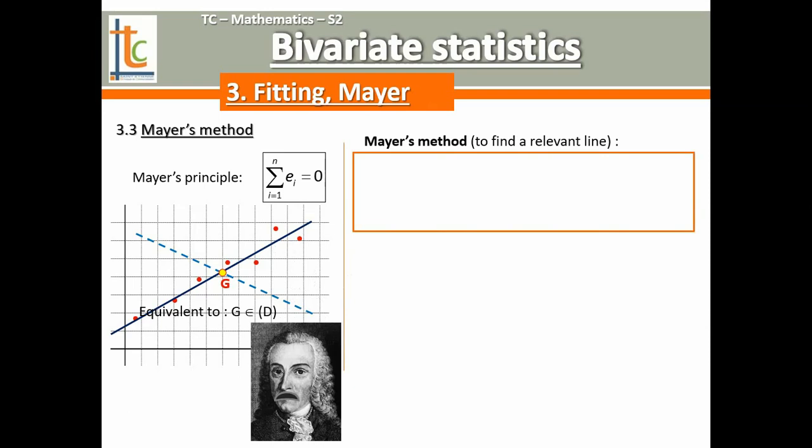So first, he decided to divide his cloud into two sub-clouds of the same size, to fairly divide the cloud horizontally by values of x. He decided to cut the cloud and to separate the points whose abscissas were weak and the points whose abscissas were big. Then in each sub-cloud, we have to determine the midpoints G1 and G2, and then to draw the line G1, G2.